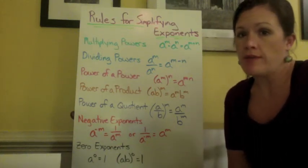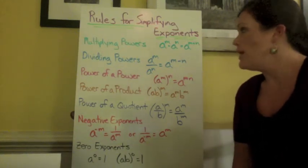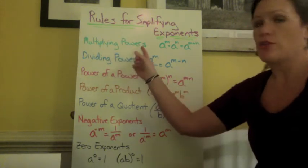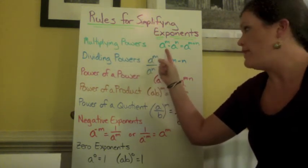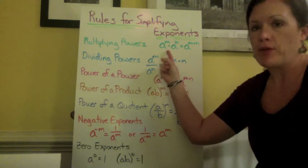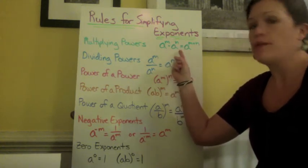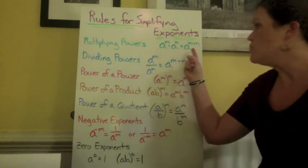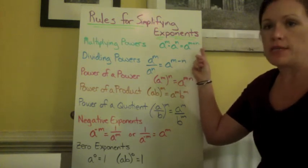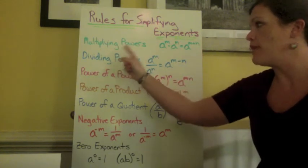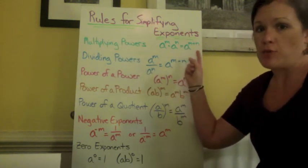Let's talk about rules for simplifying exponents. We have multiplying powers as our first rule. That means when we have a to the m power times a to the n power, that would be equal to a to the m plus n power. So in multiplying powers, we add their exponents.